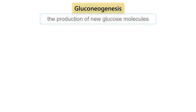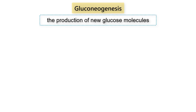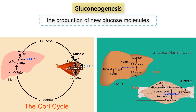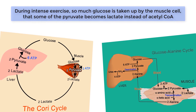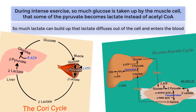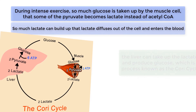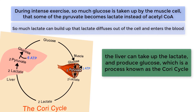Lastly, to increase blood glucose, the liver can rely on gluconeogenesis, which is the production of new glucose molecules. The Cori cycle and the glucose alanine cycle are the most common pathways the liver uses in gluconeogenesis. In the normal breakdown of glucose inside a cell, glucose is split into two pyruvate molecules that are eventually degraded into two acetyl-CoA molecules. However, during intense exercise, so much glucose is taken up by the muscle cell that some of the pyruvate becomes lactate instead of acetyl-CoA. So much lactate can build up that it diffuses out of the cell and enters the blood. Besides being used as fuel in the heart, the liver can also take up the lactate and produce glucose — a process known as the Cori cycle.